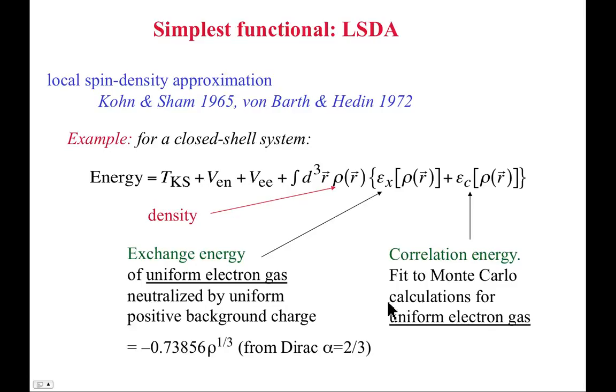So the simplest functional that you might imagine, and Kohn and Sham discussed it as well as von Barth and Hedin in 1972, is the so-called local spin density approximation. And sometimes people don't use the S in there for spin. They just say local density approximation.